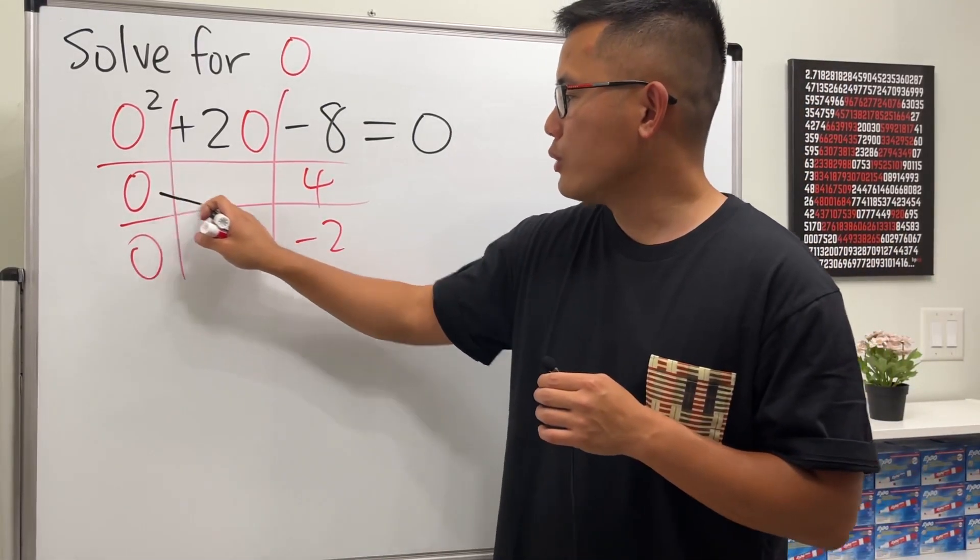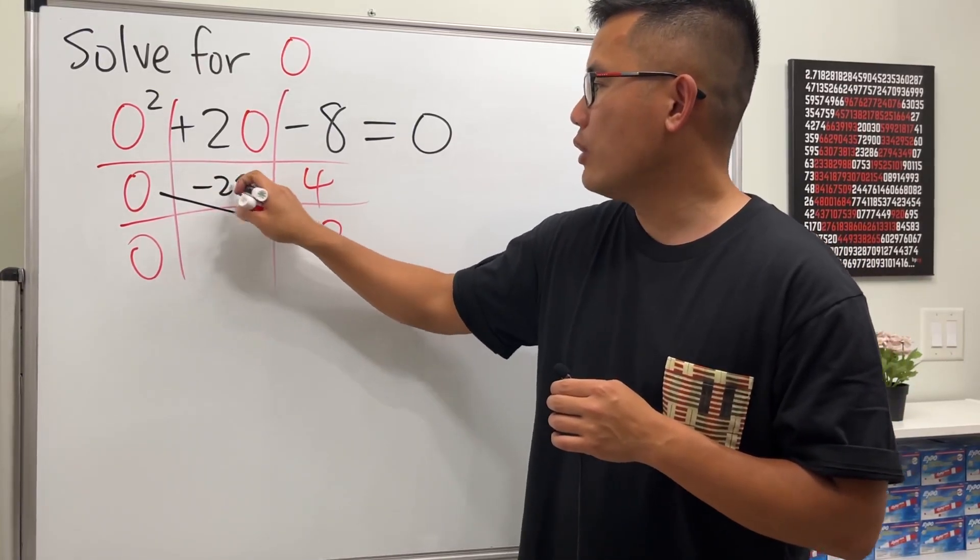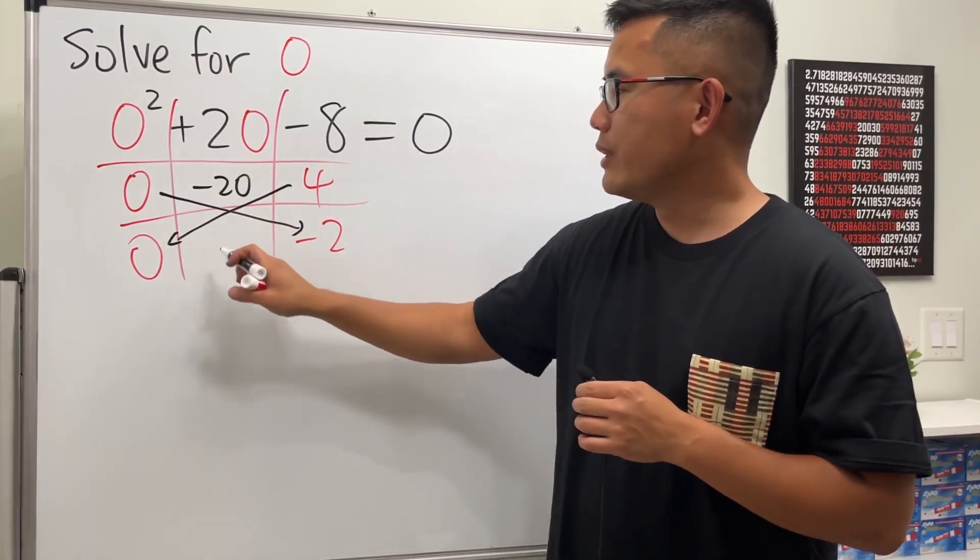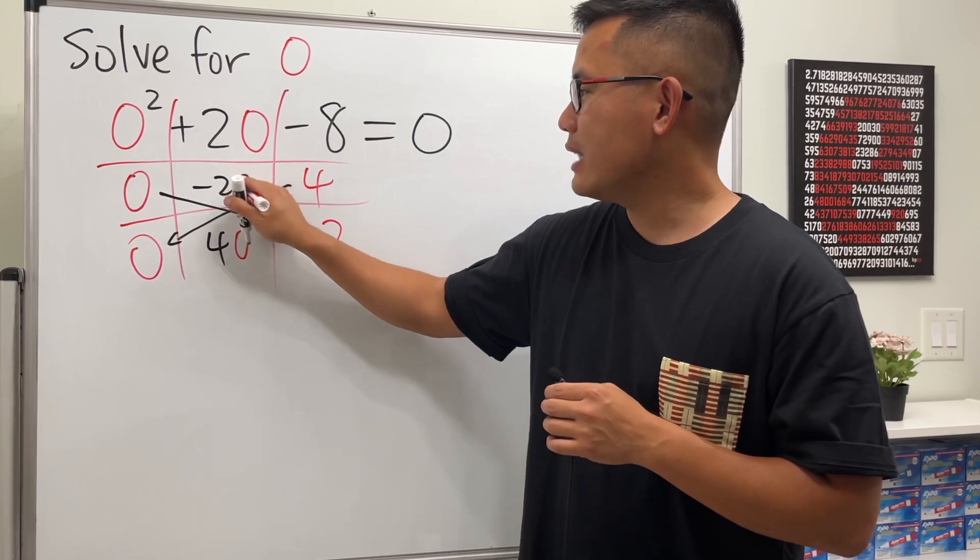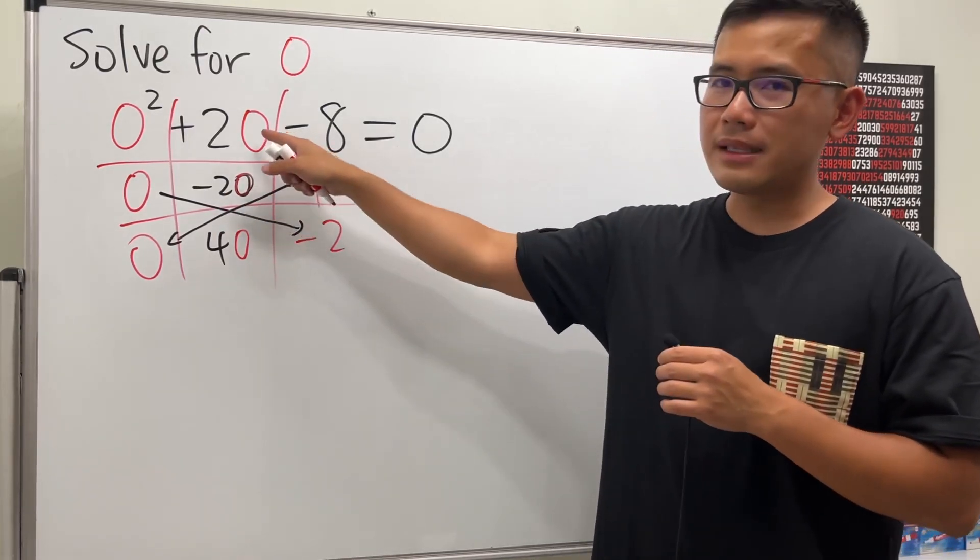And you see that if we do O times negative 2, we get negative 2O. And then 4 times O, we get 4O. So you see that if we combine this and that, we do get positive 2O in the middle.